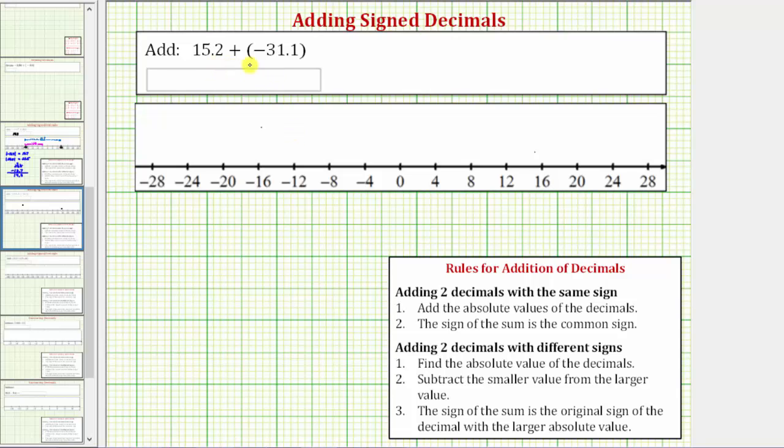Because we have a positive plus a negative, we'll be using the rules for adding two decimals with different signs. For step one, we find the absolute value of both decimals. Sometimes absolute value will also be referred to as magnitude. So we need to find the absolute value of positive 15.2 and the absolute value of negative 31.1. The absolute value of a number is a number's distance from zero, and distance is always positive, and therefore absolute value is always positive. The absolute value of positive 15.2 is positive 15.2. The absolute value of negative 31.1 is positive 31.1.